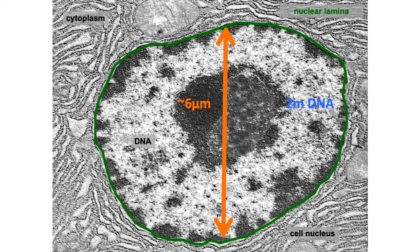To motivate this lecture, here I'm showing you a transmission electron microscope image of a mouse pancreatic nucleus. The nucleus is approximately 6 micrometers long. Within that 6 micrometers, this mouse cell has to fit about 2 meters worth of DNA. Obviously, the DNA has to be packed in a way that allows it to be folded and unfolded quickly in a controlled way, such that you can properly express all the different genes and elements within your genome.